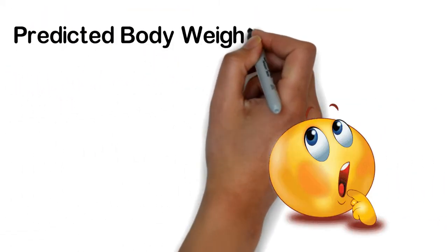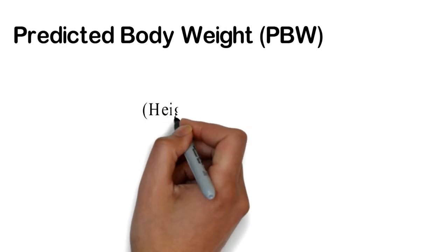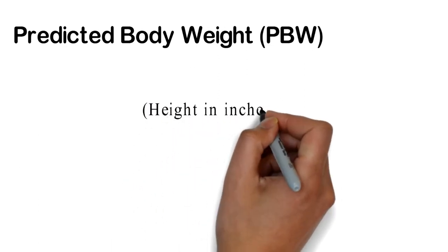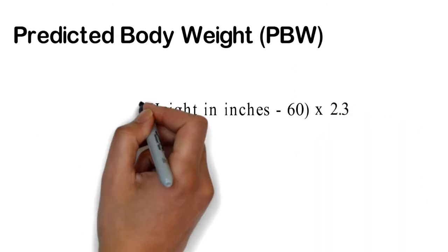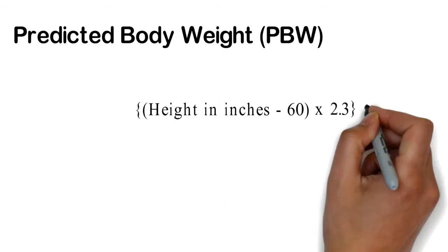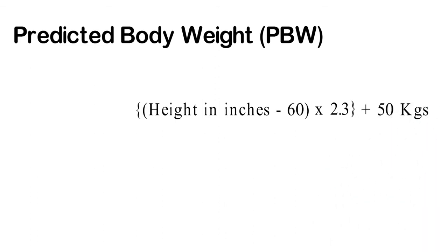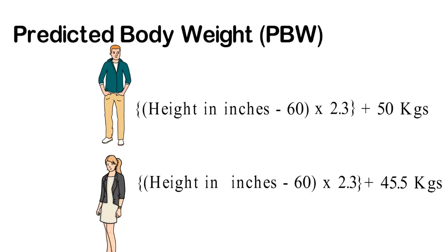The first one is predicted body weight. How can we calculate the predicted body weight? The formula for predicted body weight is height in inches minus 60, multiplied by the factor 2.3. If to the whole calculation 50 kg is added, it gives the predicted body weight for male. If 45.5 kg is added to the calculation, it gives the predicted body weight for female.